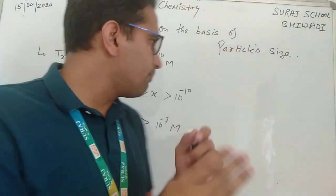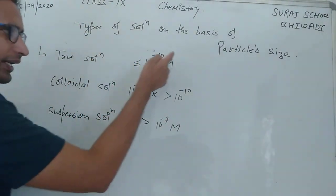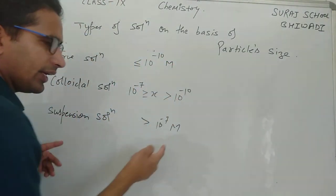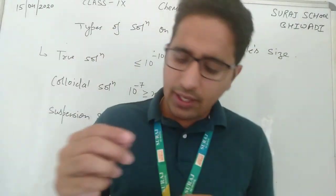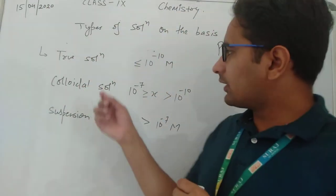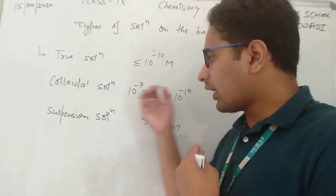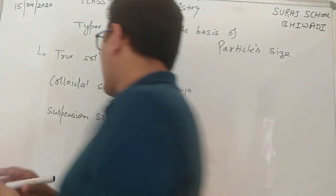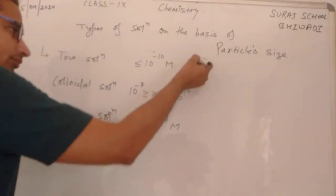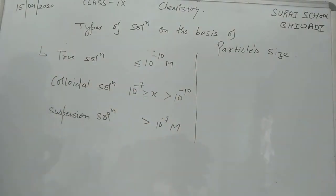तो there are three types of solution: true, colloidal, suspension — और particle का size यह होता है। इसको आप tabular form में अपनी copy में लिखेंगे, आज की date डालेंगे। Tabular form में: true solution में particle size इतना, colloidal में इतना, और suspension में इतना होता है।